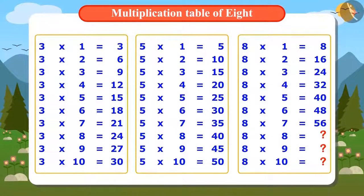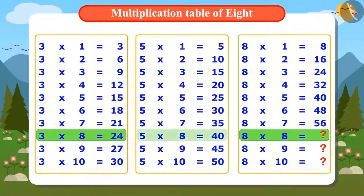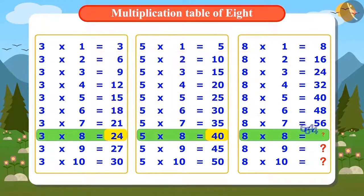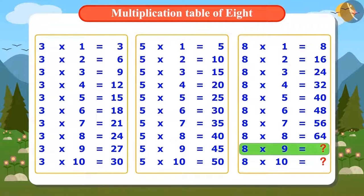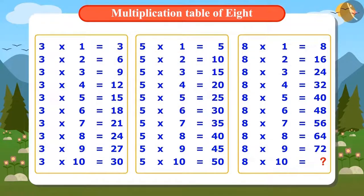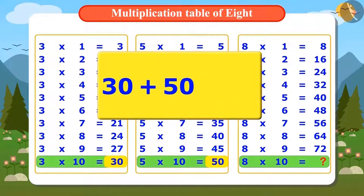Vandana has calculated up to 7 times 8. Let's see how she finds the next number, which is 8 times 8. To find 8 times 8, we add 8 times 3 and 8 times 5, that is 24 and 40, giving us 64. To find 9 times 8, we add 27 and 45, giving 72. For 10 times 8, we add 30 and 50, giving 80.